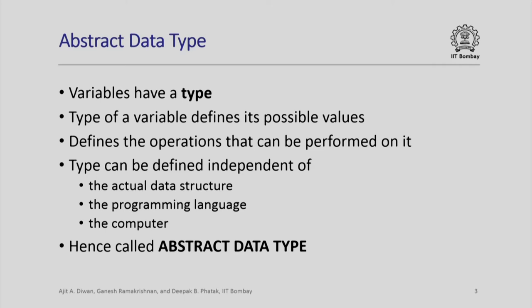An abstract data type only specifies what the possible values of that variable are and what operations can be performed on it. It does not say how the variable is represented inside the computer or which programming language is used. We are only concerned about the possible values and how you can manipulate those values.